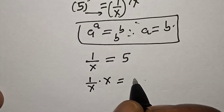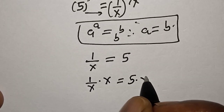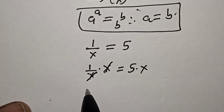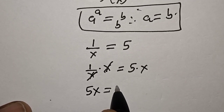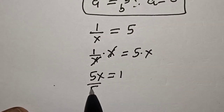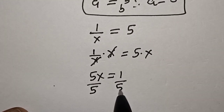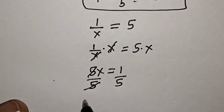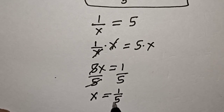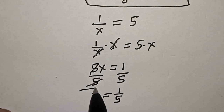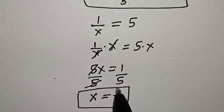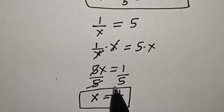Multiply both sides by s: 1 over s multiplied by s is equal to 5 multiplied by s, and the s cancels, giving 5s is equal to 1. Dividing both sides by 5, s is equal to 1 over 5. That is our final answer. Like, share, comment, and subscribe. Thank you, bye bye.